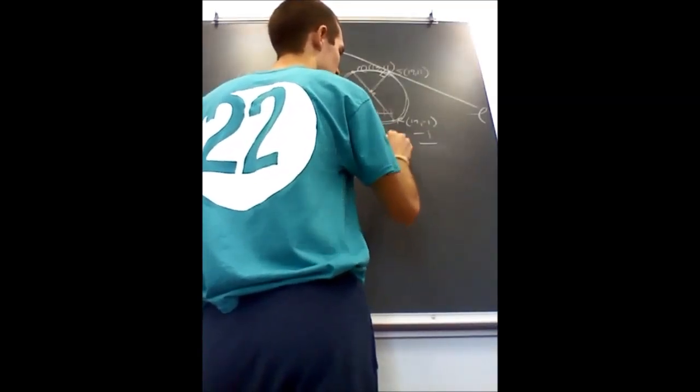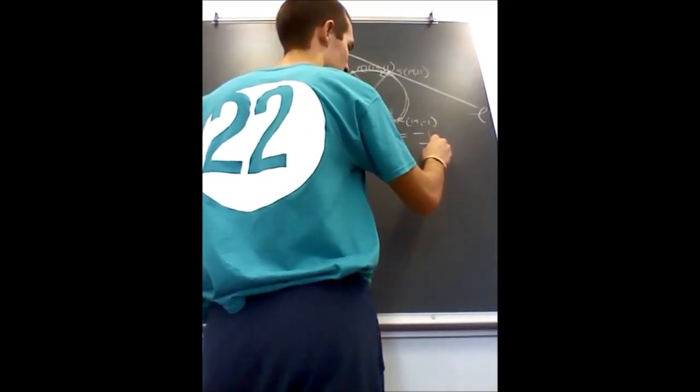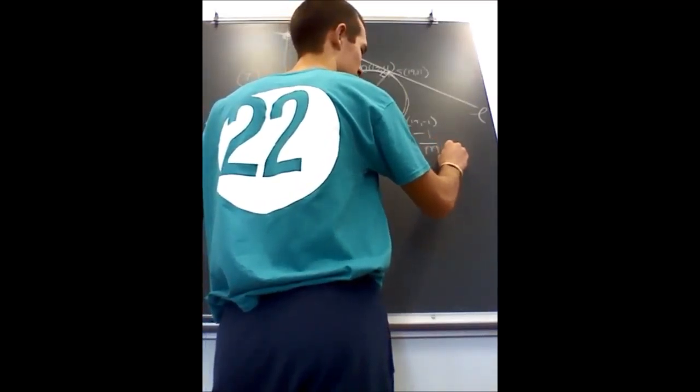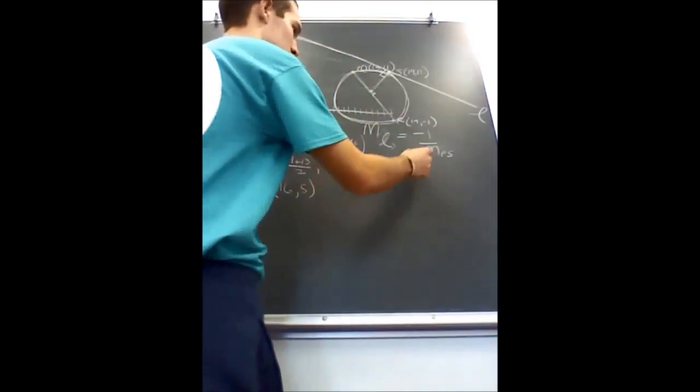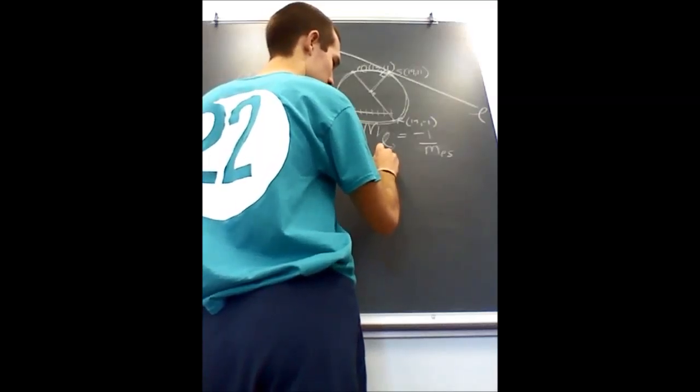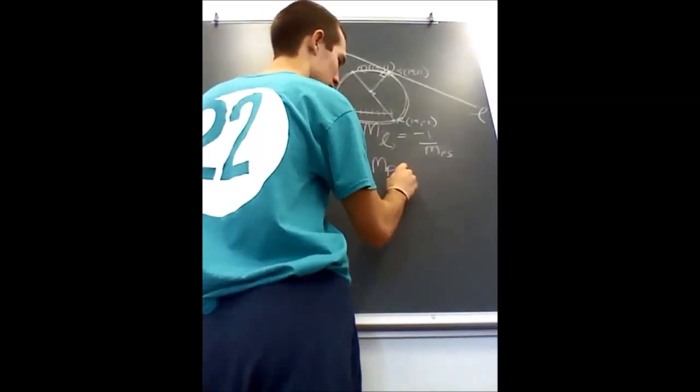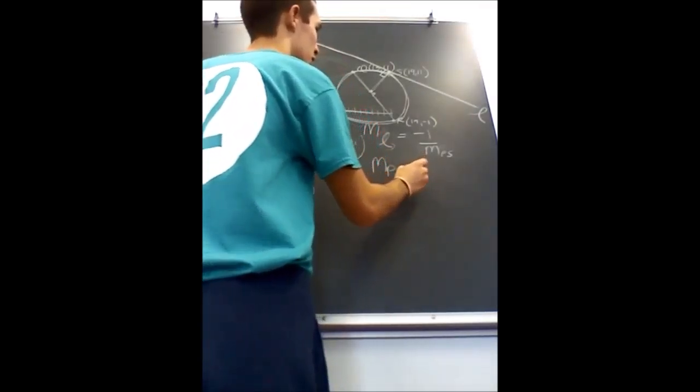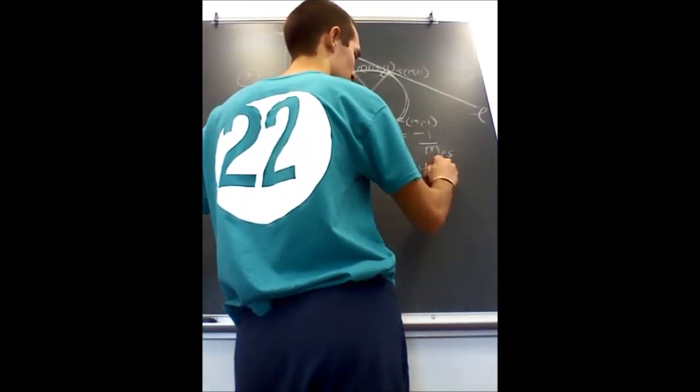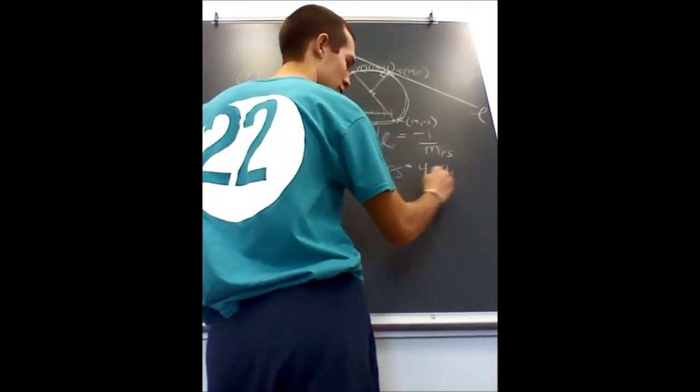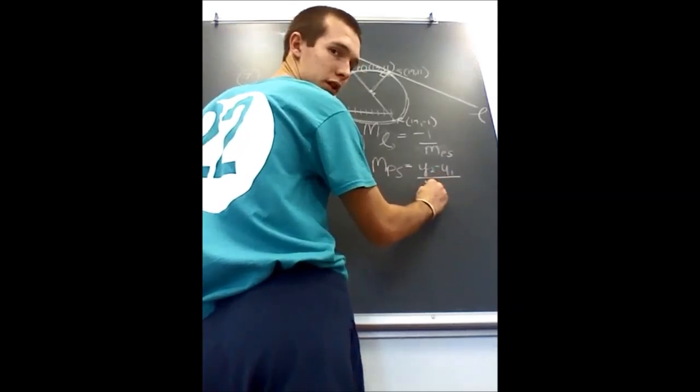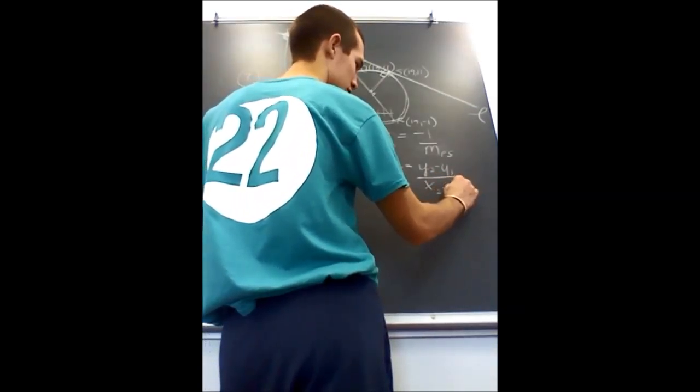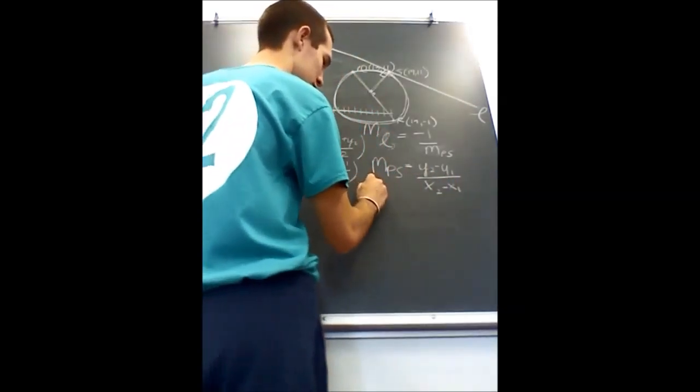So first we need to find the slope of PS, which would be equal to the formula (Y2 - Y1)/(X2 - X1). The slope of PS would be (11 - 5)/(19 - 16), which equals 2.